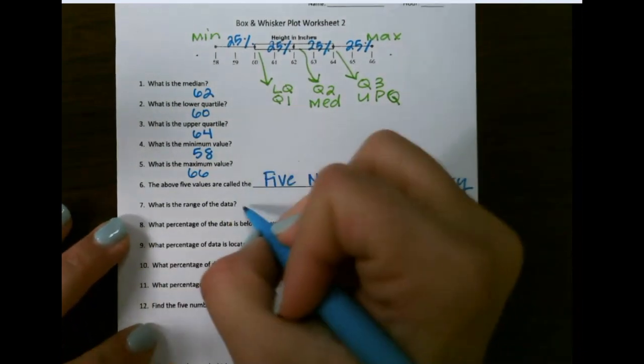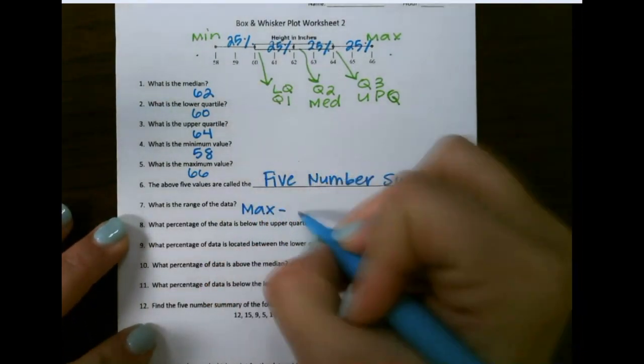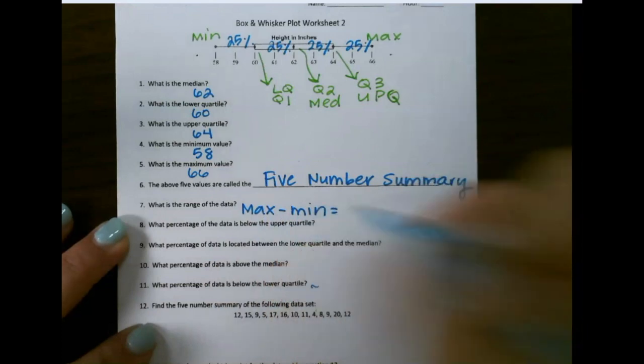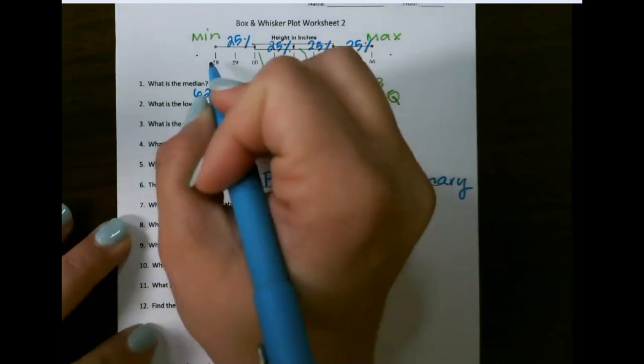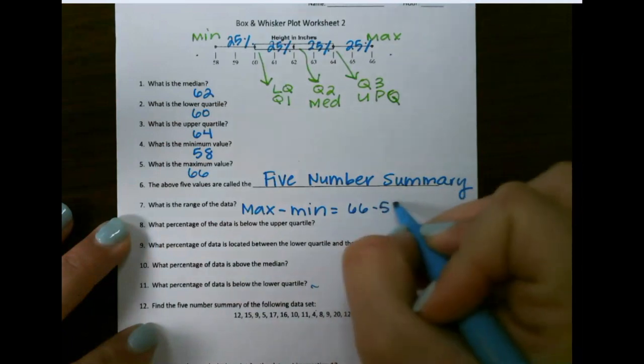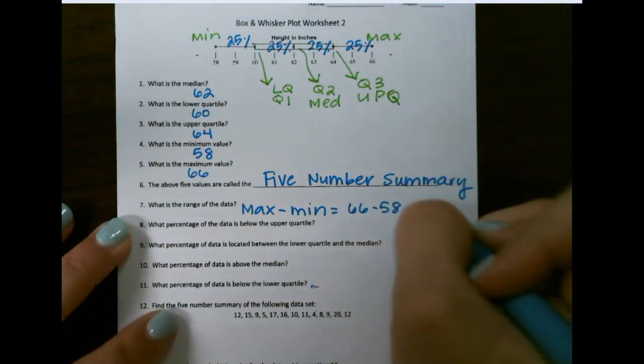So the range of your data is going to be the maximum minus the minimum, which is 66 minus 58, and that's going to give me 8.